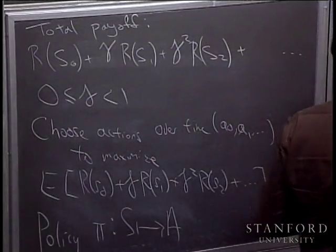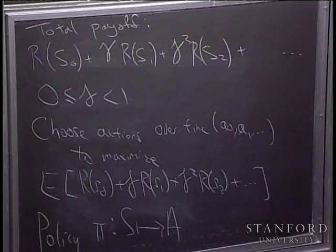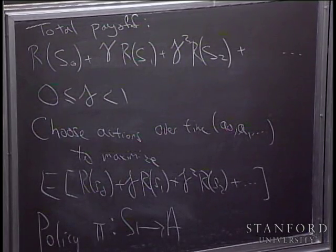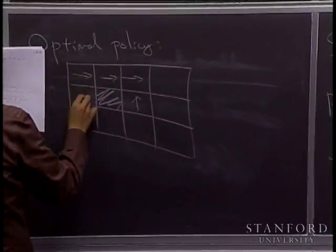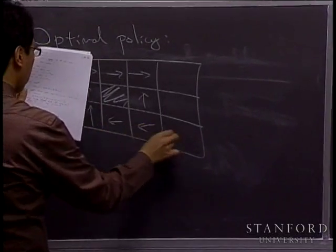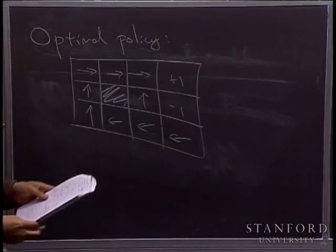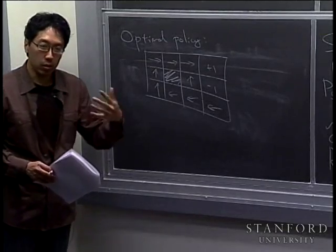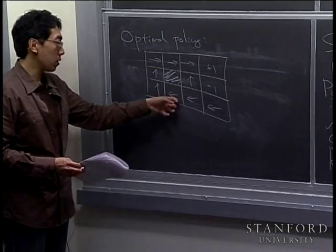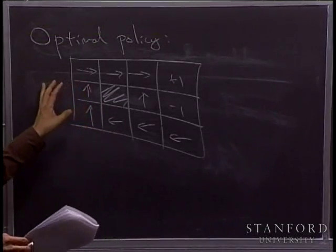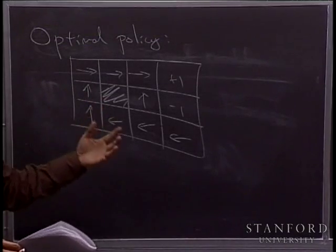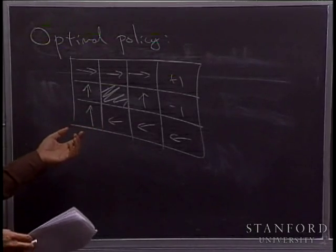Here is an example of a policy — this actually turns out to be the optimal policy for this MDP, and I'll tell you later how I computed it. A policy is just a mapping from states to actions, telling you for each state what action to take. This particular policy happens to be optimal in the sense that executing it will maximize your expected value of the total payoff — your expected total sum of discounted rewards.